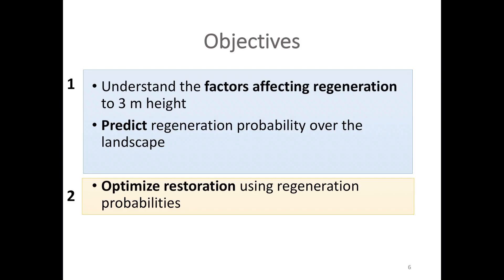I have two objectives. The first was to understand the factors affecting regeneration to a 3-meter height, which was my response variable. From there, I wanted to predict regeneration probability over the landscape. I'll focus most of the talk on the first objective, as it pertains more to the wet areas mapping. Using information from the first objective, I also wanted to optimize restoration of seismic lines using these regeneration probabilities.